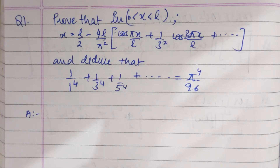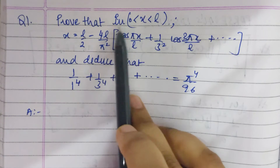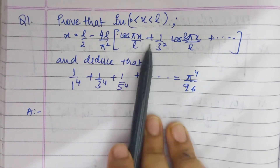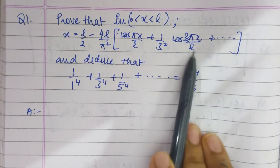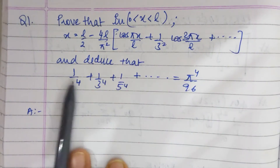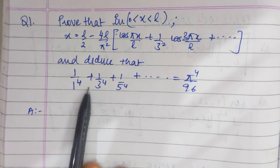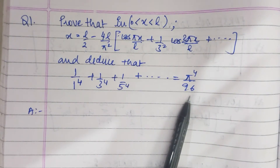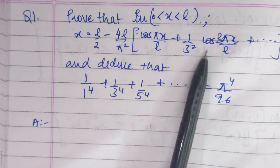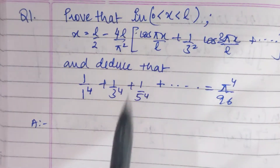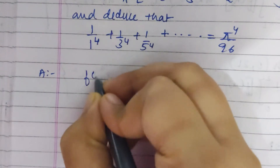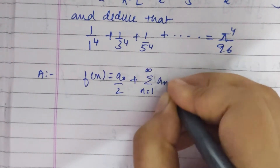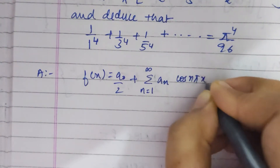Now let us take an important question on this topic. Prove that when x lies between 0 to l, x equals l by 2 minus 4l by pi squared into cos(pi x by l) plus 1 by 3 squared times cos(3 pi x by l) and so on. Also deduce that 1 by 1 to the power 4 plus 1 by 3 to the power 4 plus 1 by 5 to the power 4 up to infinity equals pi to the power 4 by 96. Since there are only cosine terms, the half-range series will be f(x) equals a naught by 2 plus summation from n equals 1 to infinity of a_n cos(n pi x by l).